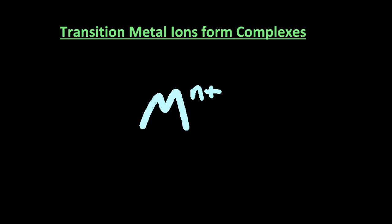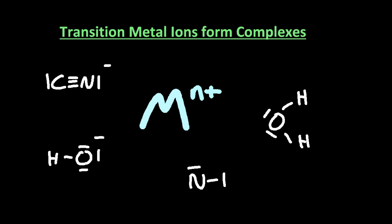Transition metals also form complexes. That's where you have a central transition metal iron surrounded by ligands. What's a ligand? It's something that has a lone pair of electrons and can make a dative covalent bond with that central transition metal iron. What have you made once they attach? You've made a complex.